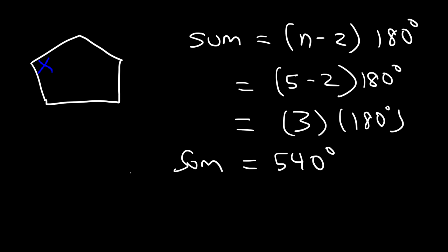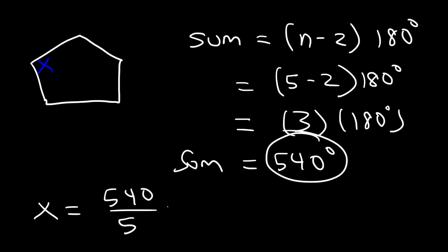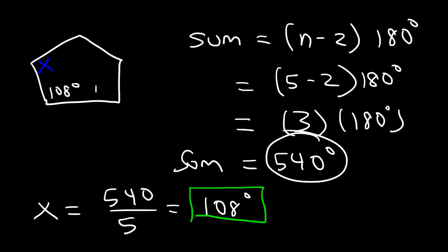Now, to find the interior angle, which we can call x, take the total angle and divide it by the number of sides. So we're going to divide by 5. 540 divided by 5 is 108. So that's going to be the measure of each interior angle inside a pentagon — every angle inside it is 108 degrees, with a total angle sum of 540.